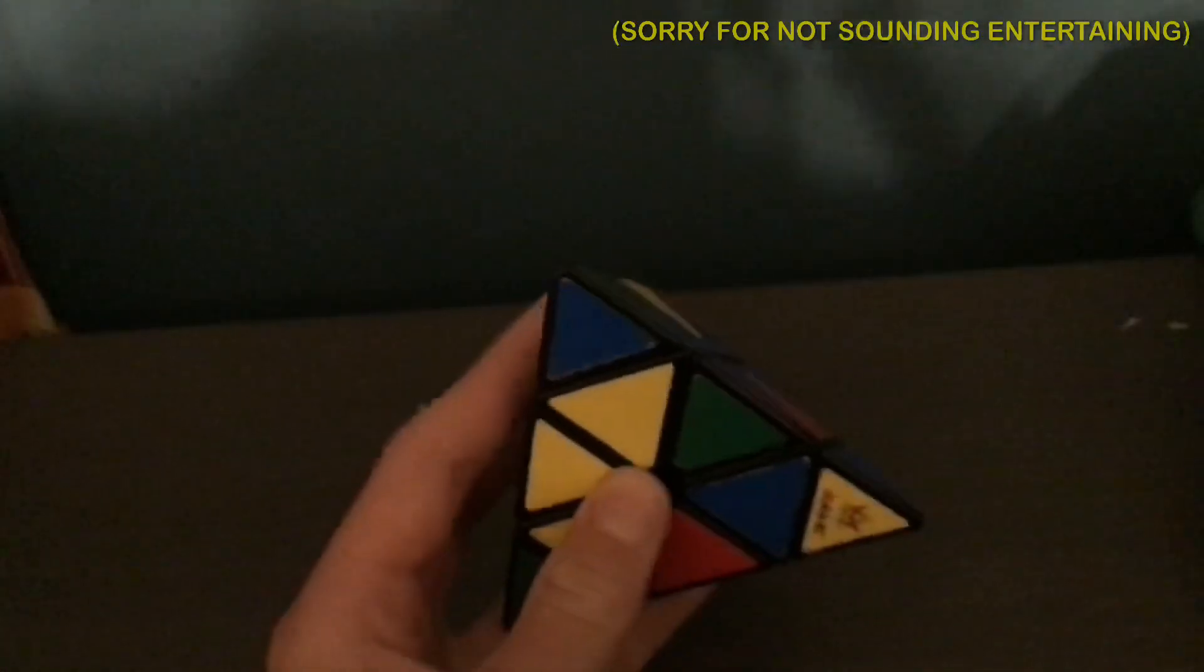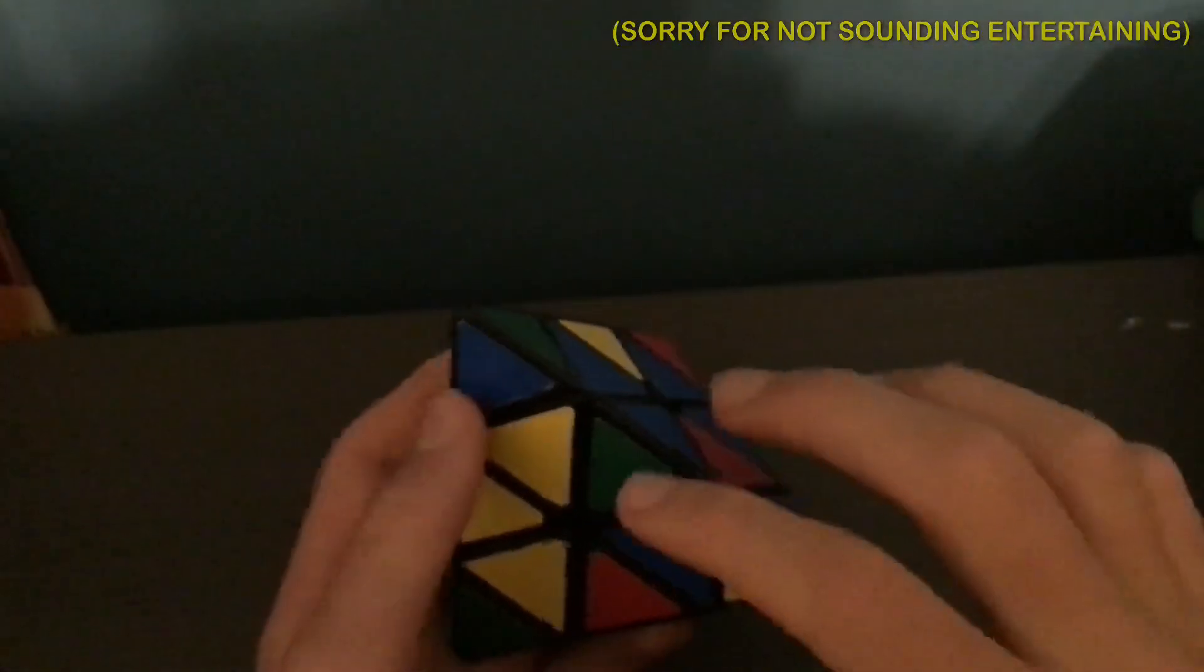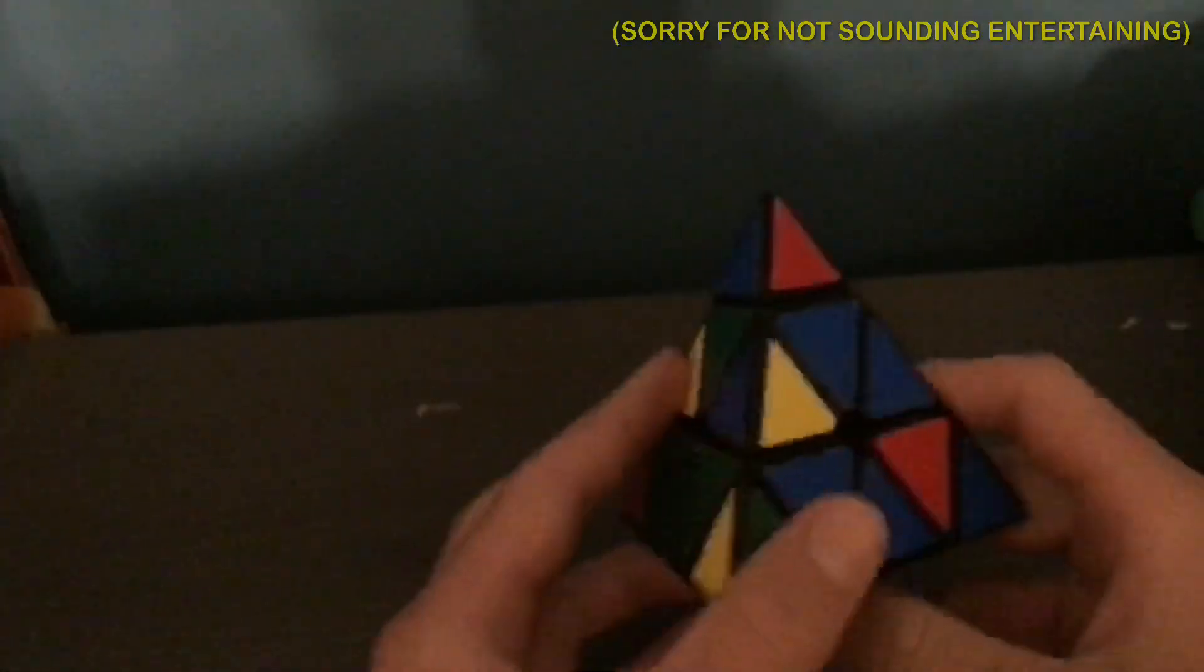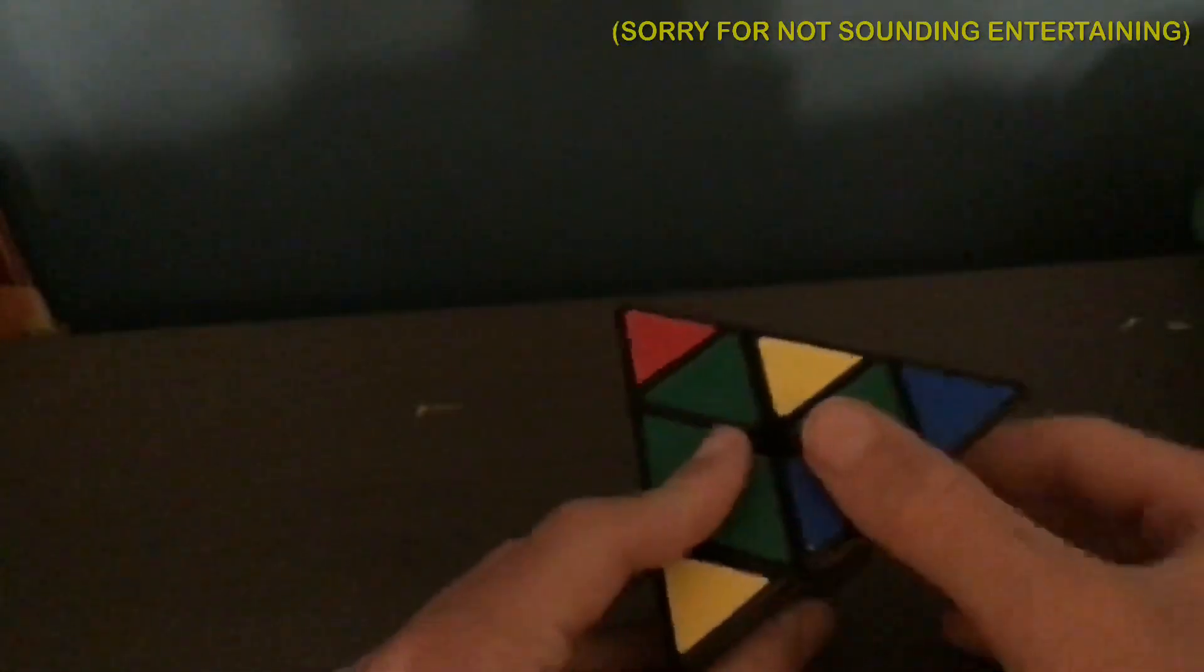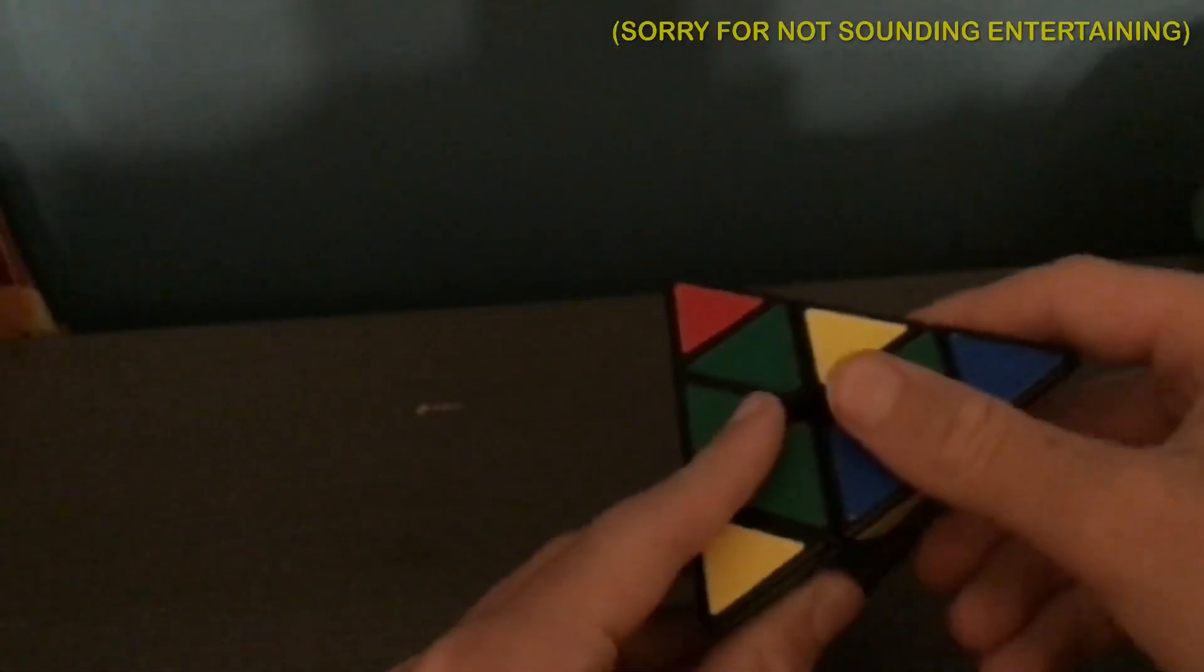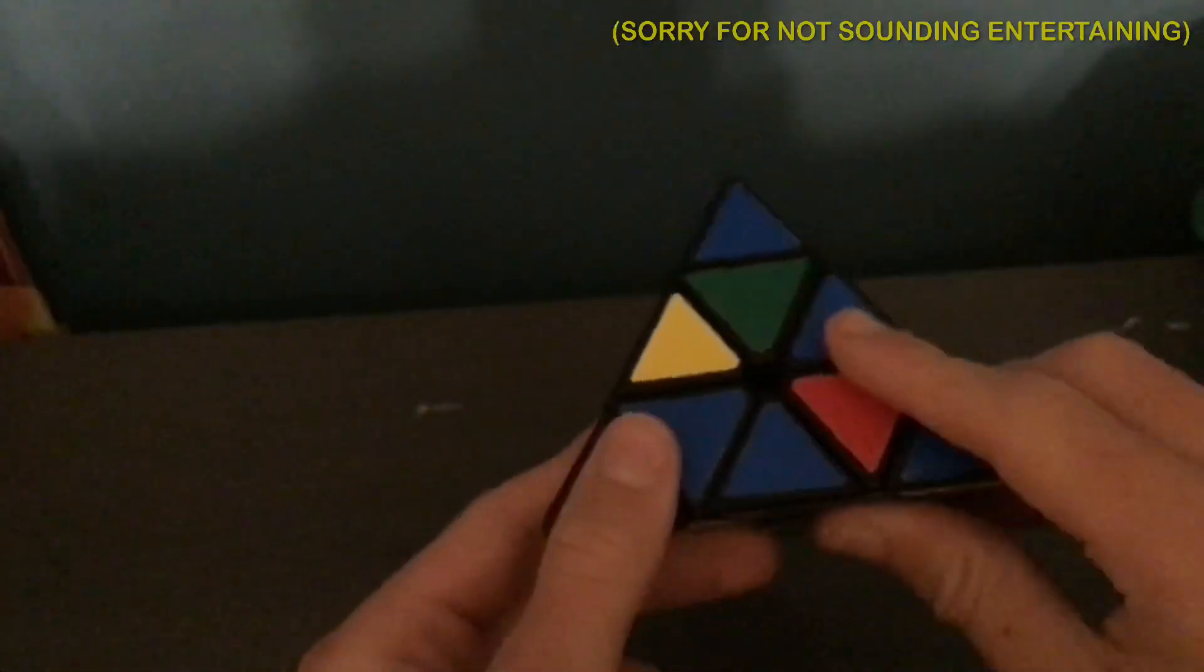So now, you find a piece that has green and blue, or whatever side you started with, just put it in there. So there's one easy algorithm that I can do, and it's like that, that, and that, and that's it. That's the whole algorithm.